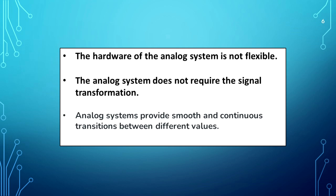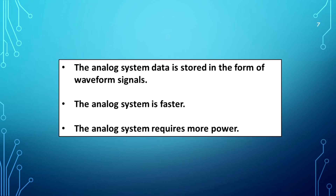The hardware of the analog system is not flexible. The analog system does not require signal transformation. Analog systems provide smooth and continuous transition between different values. The analog system data is stored in the form of waveform signals. The analog system is faster.